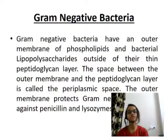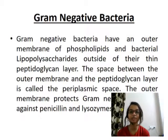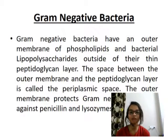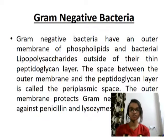Gram negative bacteria have an outer membrane of phospholipids and bacterial lipopolysaccharides outside of their thin peptidoglycan layer. The space between the outer membrane and the peptidoglycan layer is called the periplasmic space. The outer membrane protects Gram negative bacteria against penicillin and lysozyme.